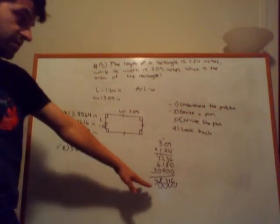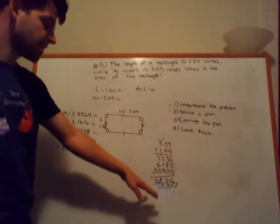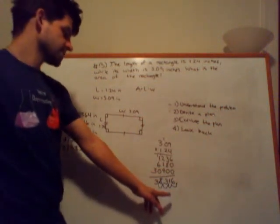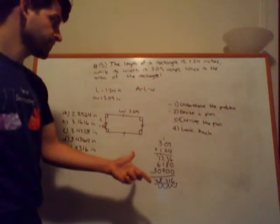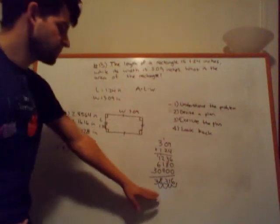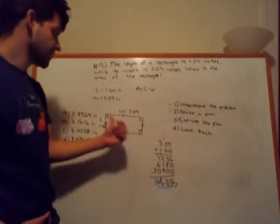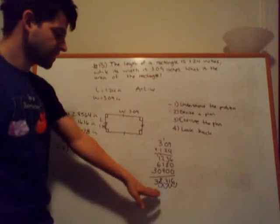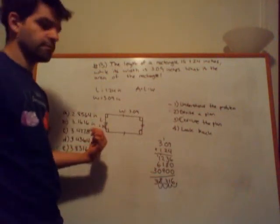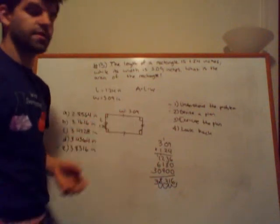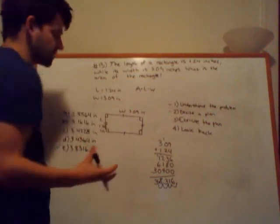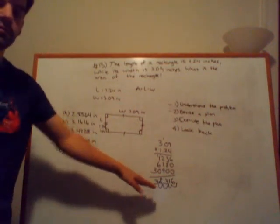The next thing that we can also do to make sure that our answer makes logical sense is if we take 3.8316 and divide by either the length or the width, we're going to end up with the other corresponding values. So, if we take 3.8316 and divide by the length, we'll get the width. So, if we divide 3.8316 by 1.24, we will get 3.09. And again, this is how we're going to look back and make sure that this answer makes logical sense.